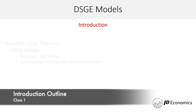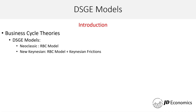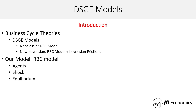So what's going to be the outline? We are going to be talking about business cycle theories, going through neoclassical models — the benchmark RBC model — and then mentioning the differences between the new Keynesian models and DSGE models, which is basically the benchmark RBC model but including some Keynesian frictions. Finally, we will finish today's tutorial with an introduction to the RBC model, discussing who are the agents, what is the shock, and how we get to the equilibrium.